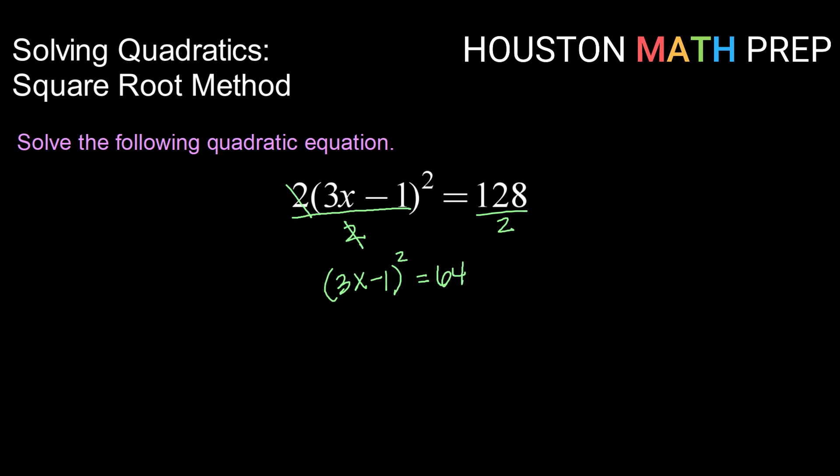Now that my squared items are isolated, I can take the square root of both sides to get rid of that squared. And that's going to leave me with 3x minus 1 equals, don't forget, positive and negative square root of 64 is 8.